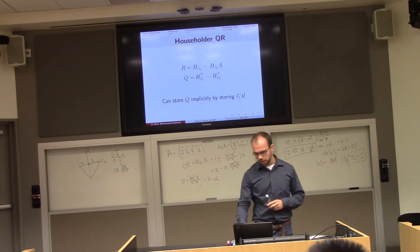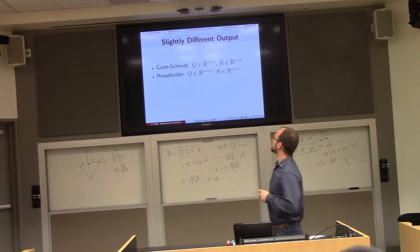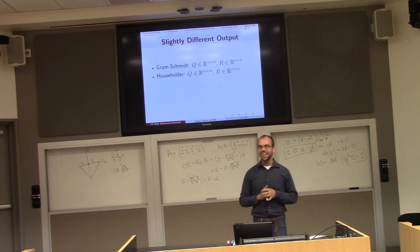So we have two strategies for doing QR. We have Gram-Schmidt and we have Householder. But in fact I kind of hid something under the rug when I told you about this.